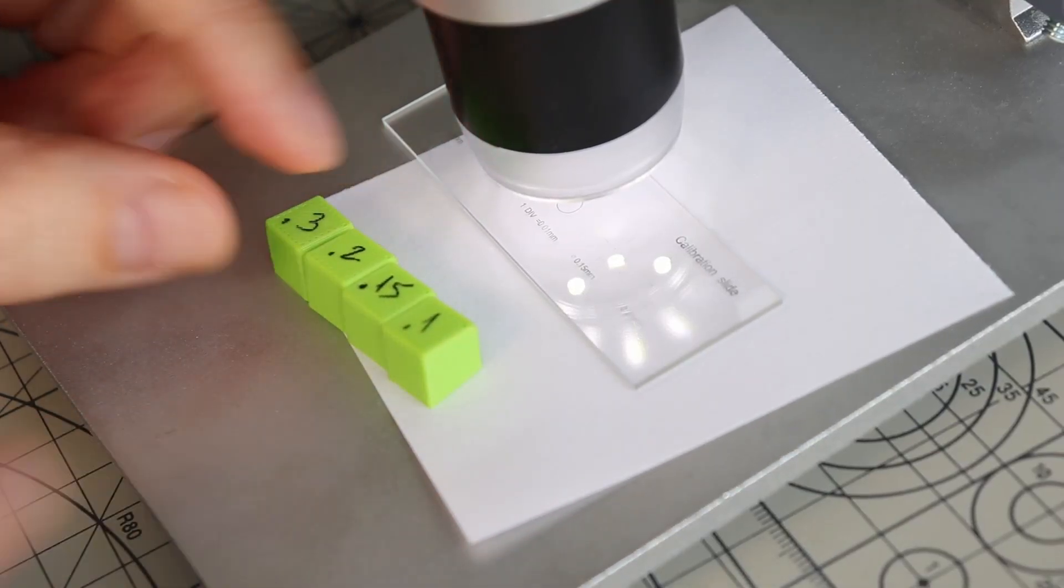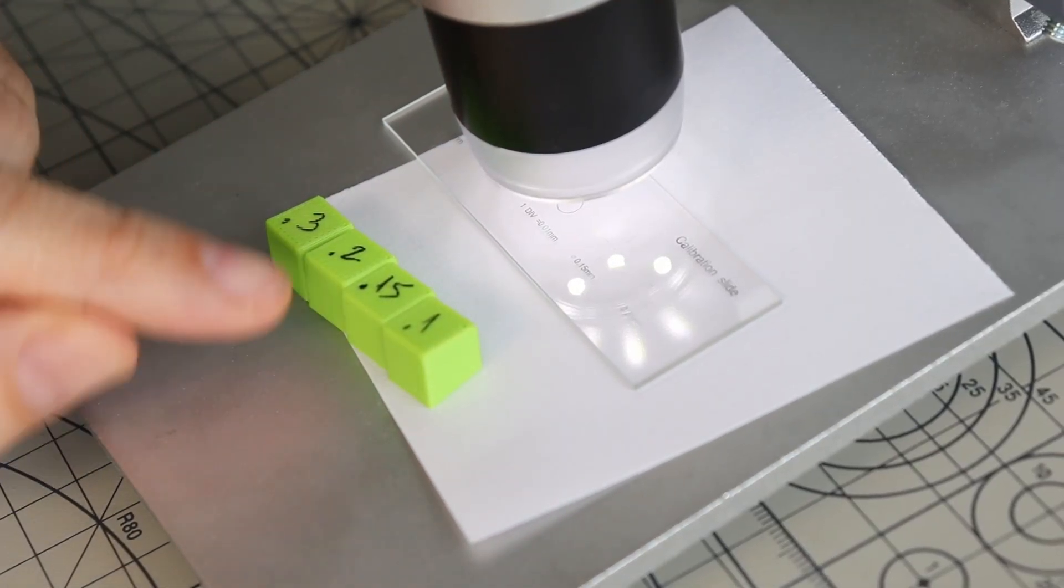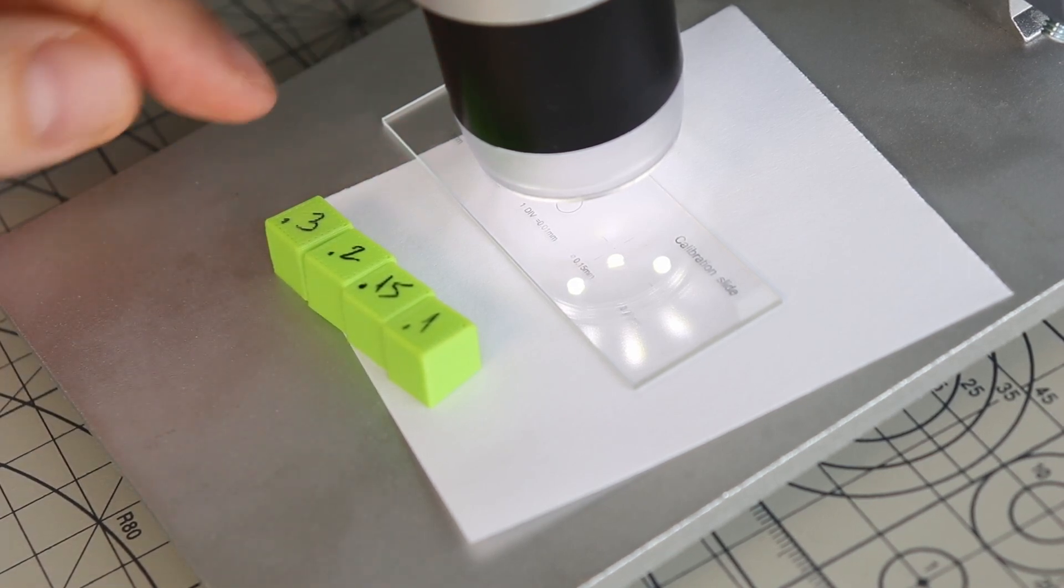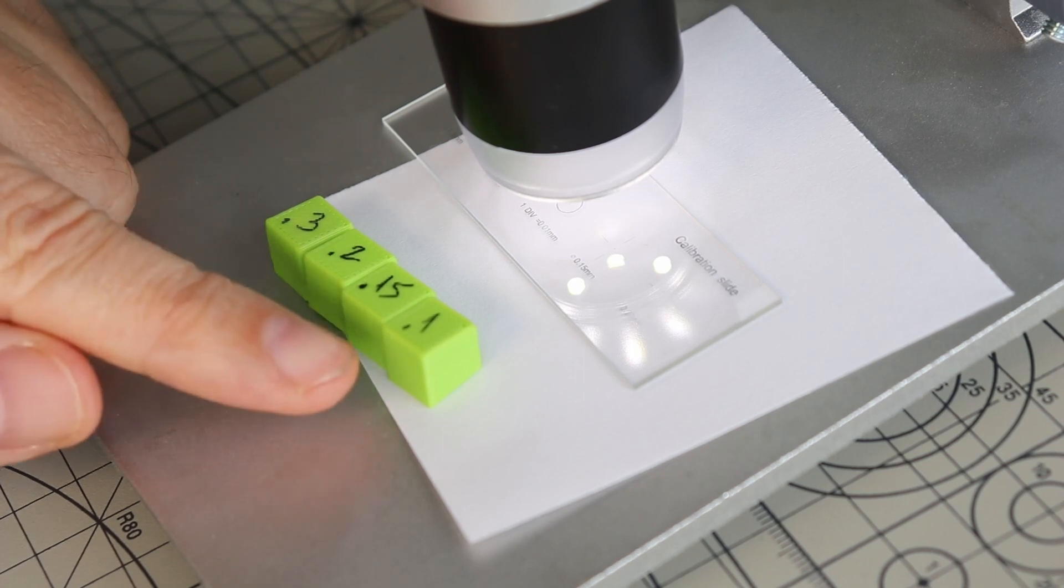In the first test I have these objects printed with 0.1, 0.15, 0.2 and 0.3 millimeter layer height and I want to see if I can measure with this ruler the printed layer height.